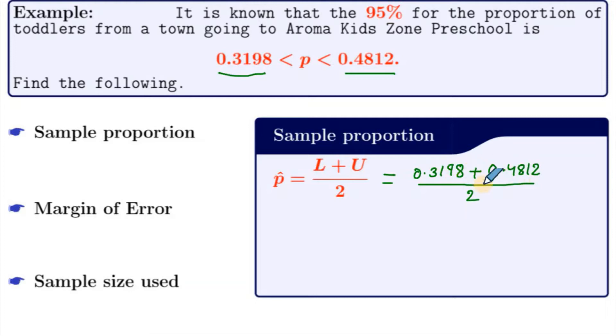When we add these two numbers and divide by 2, we get 0.4005. So this is our p-hat, which is the sample proportion.